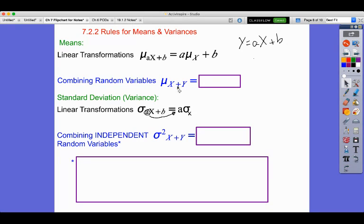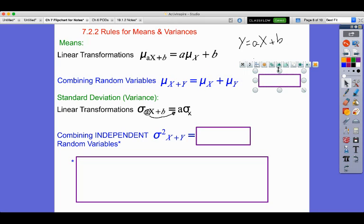Now, what if I'm combining two random variables? So I have like the monthly cost of electricity plus the monthly cost of paying my employees. If I add those two costs together, the two distributions, what's going to happen? Well, I'm going to get a mu of x plus mu of y. You can just add their means together. So once again, that's exactly the way you would expect it to be.